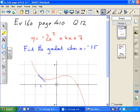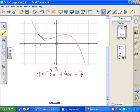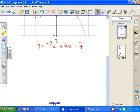Again, to find the gradient, we differentiate. So we'll take our original function, y equals minus 2x cubed plus 4x plus 7, and differentiate it.